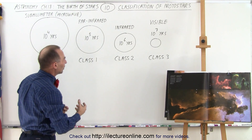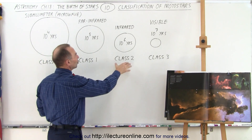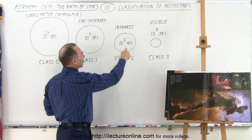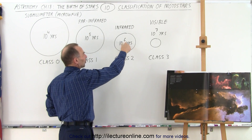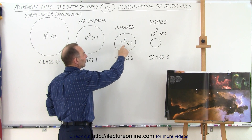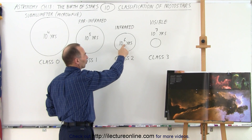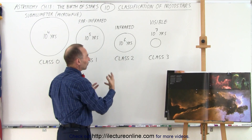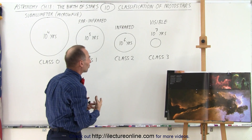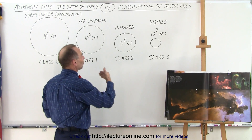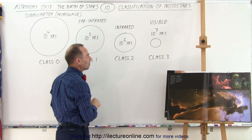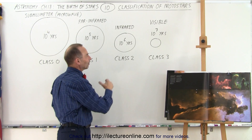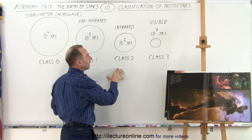The next stage is class two. At that point we have a very visible protostar at the center, reaching temperatures at the surface of several thousand degrees, and so it's beginning to radiate in the regular infrared radiation.